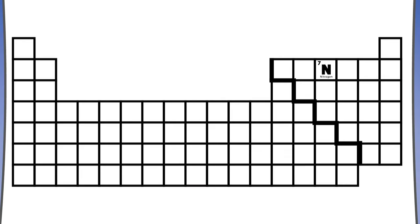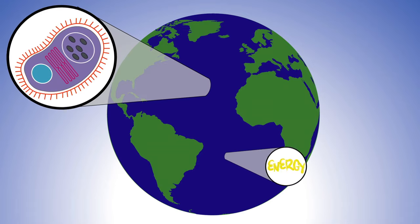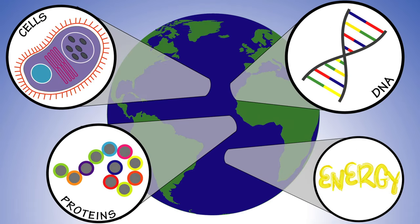Nitrogen, atomic number seven on the periodic table, is an essential element to life on Earth as it plays a major role in building structures and molecules we need to survive.